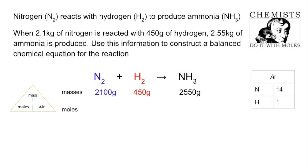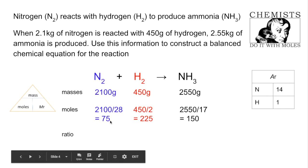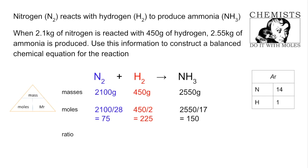We're now going to work out the moles. So we're dividing by the MR so we get 75 moles of nitrogen, 225 moles of hydrogen and 150 moles of ammonia is produced. So the next thing to get the ratio is we divide everything by 75, so that's obviously going to be one for the nitrogen. We get a three for hydrogen and we get two for ammonia and so the equation is that.